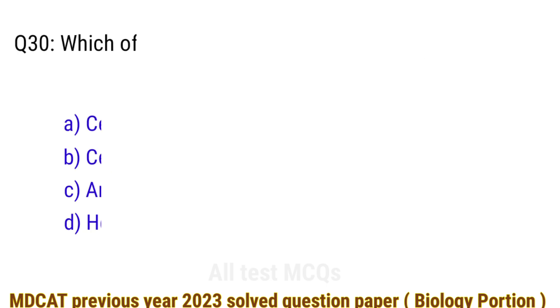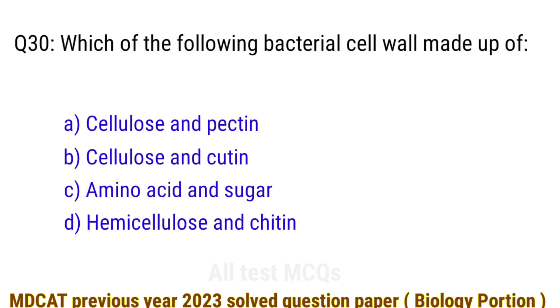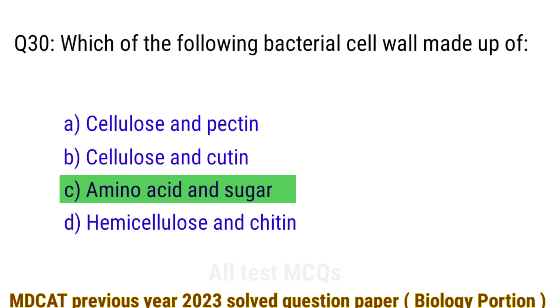Question number 30. Which of the following is the bacterial cell wall made up of? The right answer is option C: amino acids and sugar.